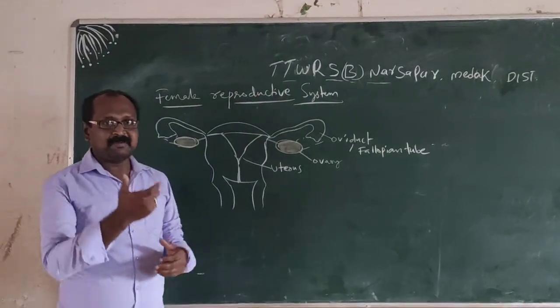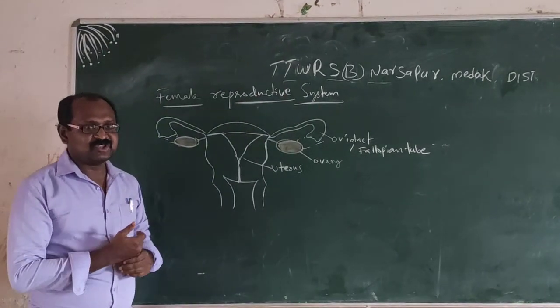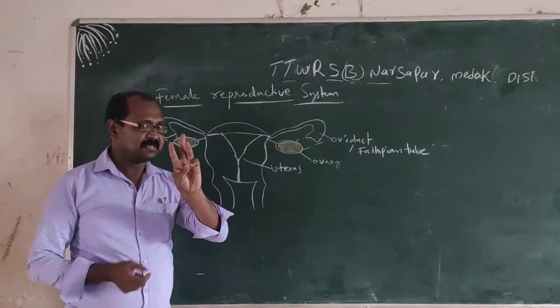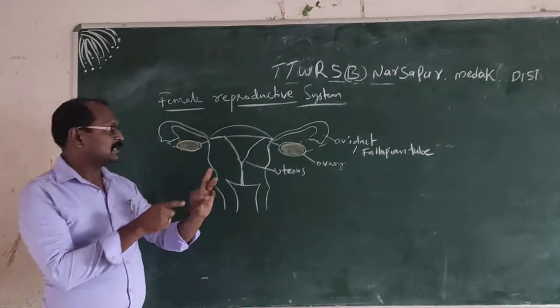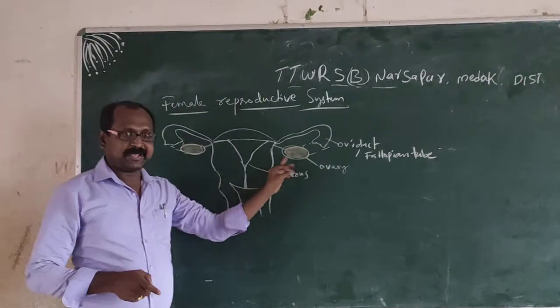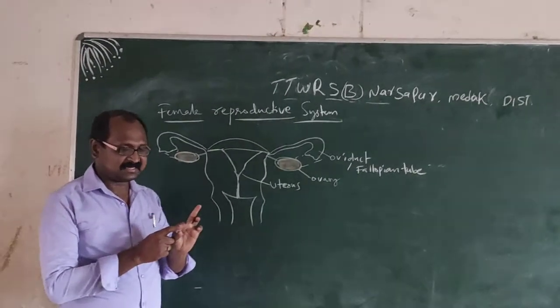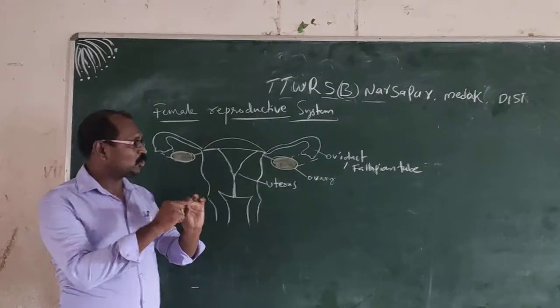The female reproductive system consists of many parts. Number one: ovary. The ovary produces eggs.